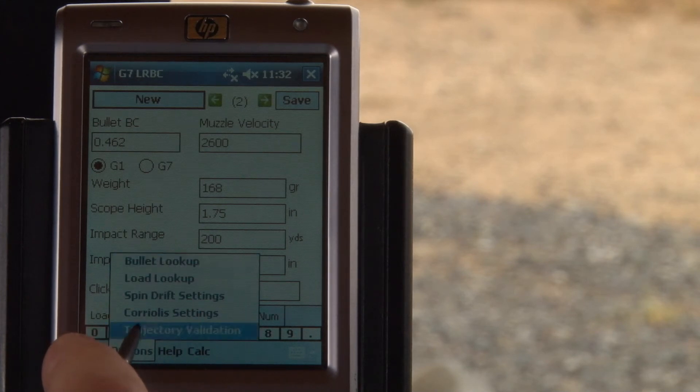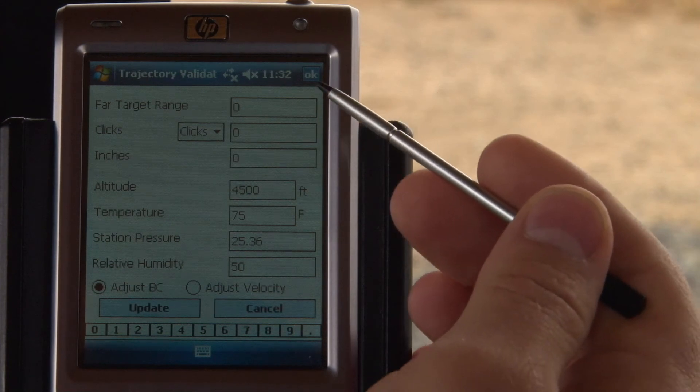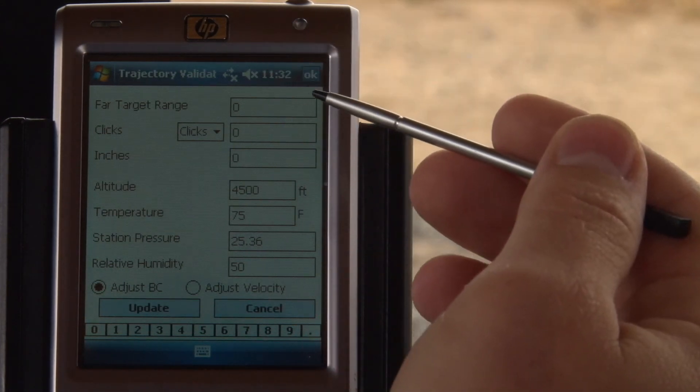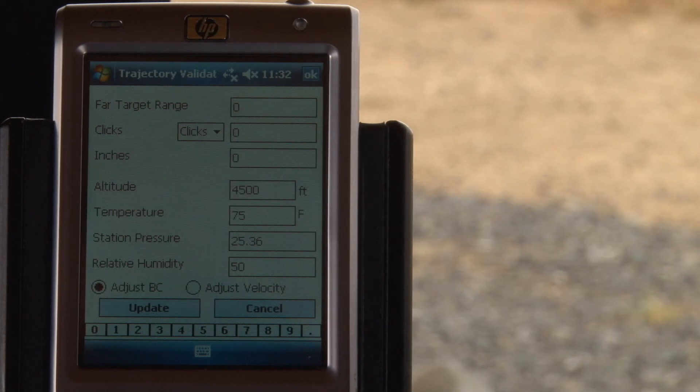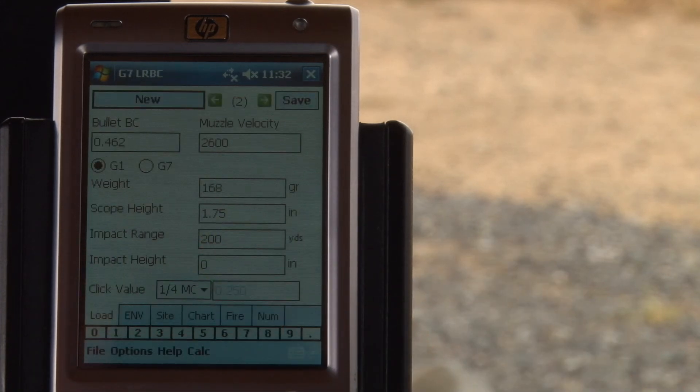And then finally, the last advanced option is your trajectory validation. In this section we can go through and input our actual drops out of our rifle so that we can calculate what the real velocity is or what your true ballistic coefficient is.